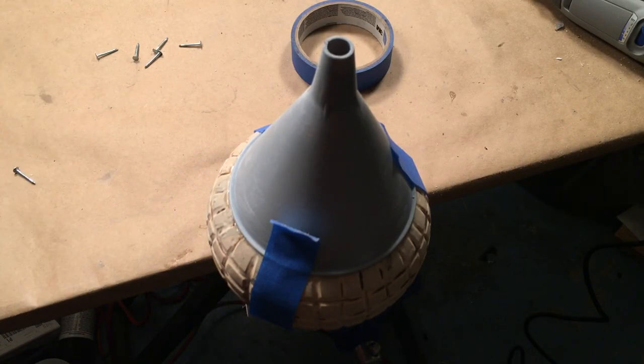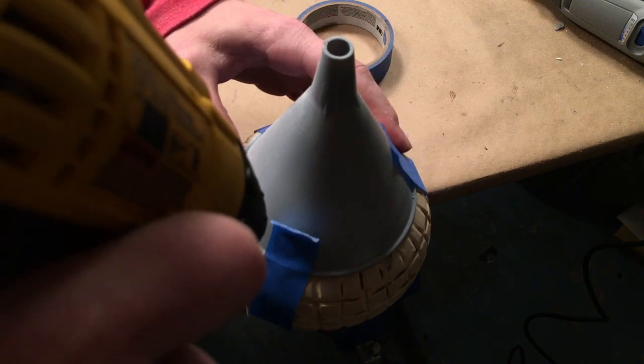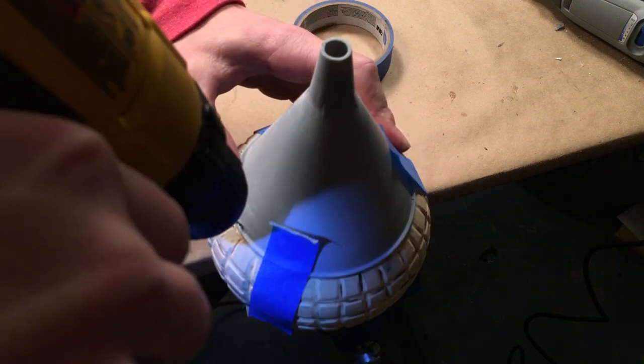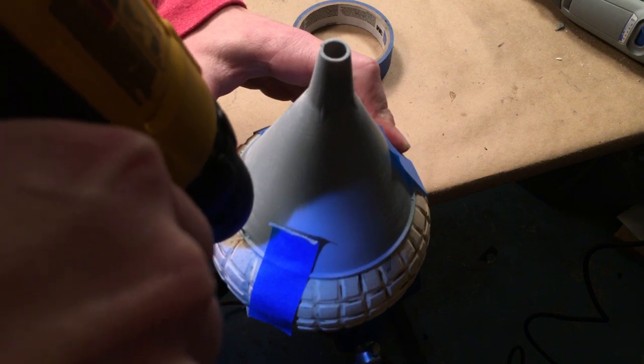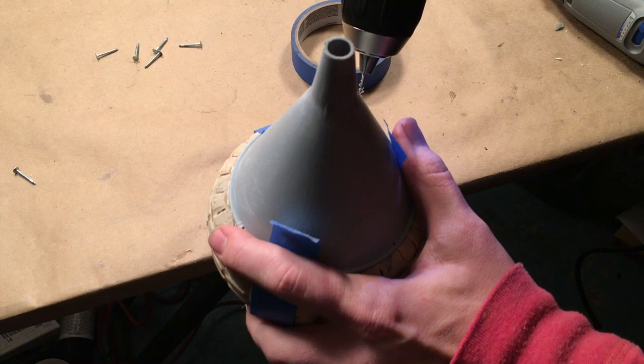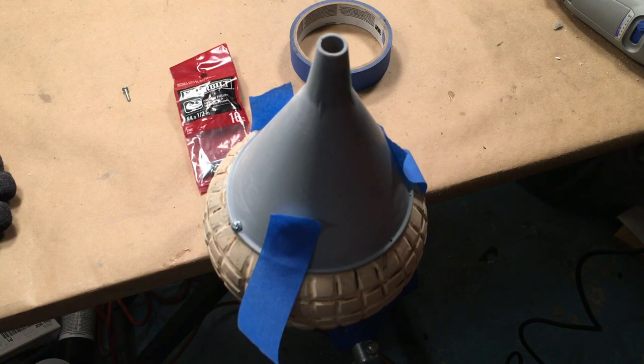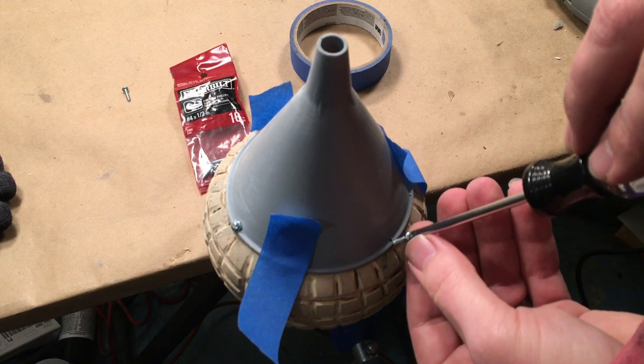Using some tape, secure the funnel on top of the sofa bun. Drill three evenly spaced pilot holes through the funnel and sofa bun. Secure the funnel to the sofa bun using number 4 half inch flat head screws.